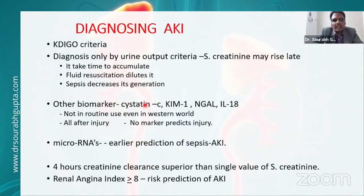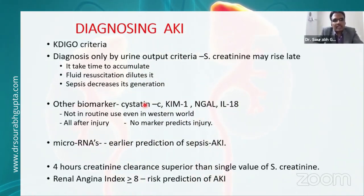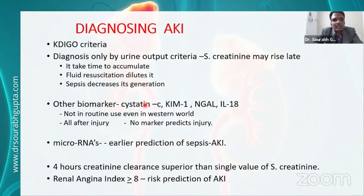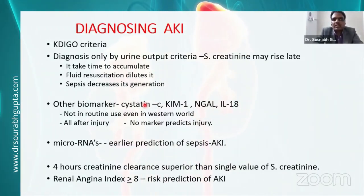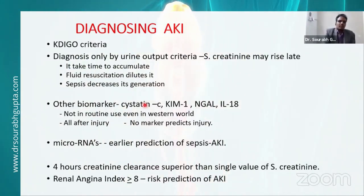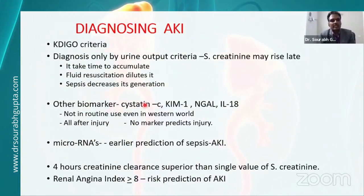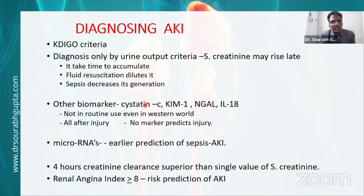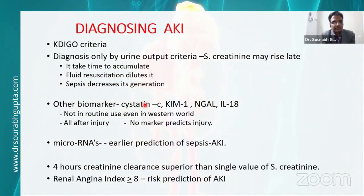Diagnosis is by KDIGO criteria. In some cases creatinine may rise late in the acute kidney injury setting, and urine output criteria may be the only one available initially because creatinine takes time to accumulate, fluid resuscitation dilutes it, and sepsis decreases its generation. There are new biomarkers like Cystatin-C, KIM-1, NGAL, IL-18, and microRNAs which can predict AKI earlier, but they are not in routine use.